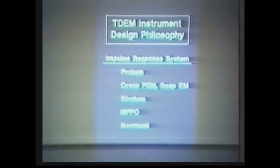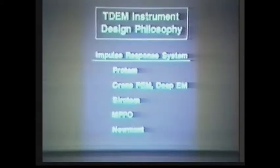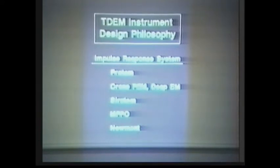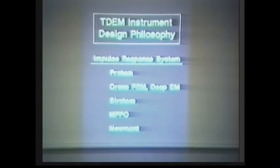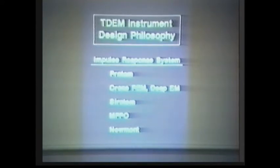I will be talking only about what we call impulsive type systems — those in which, as Alex has been talking about for the last couple of days, transmitter waveforms are step response: constant value and then shut off. These include our ProTem system, the Crone, PEM and DeepM, CyroTem, MPPO, and Newmont. I can also briefly discuss the UTEM system, which is conspicuous by its absence in this list, mainly because it's not really sold — it's operated by contractors. The others are all commercial instruments.